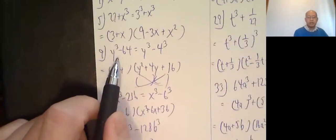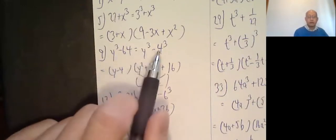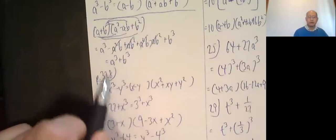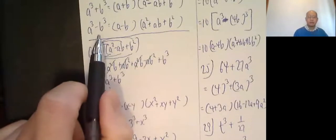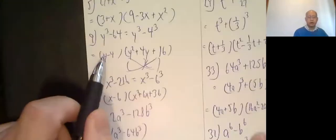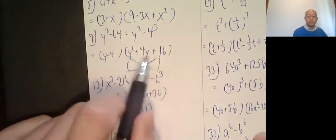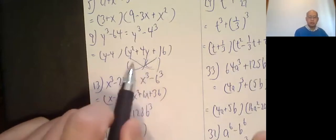y cubed minus 64. 64 is 4 cubed. y cubed minus 4 cubed. Then I use the formula for the difference of cubes. y minus 4, y squared plus 4y plus 4 squared, which is 16.